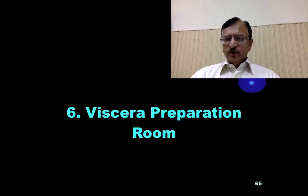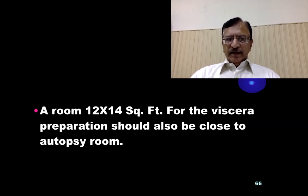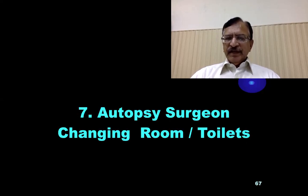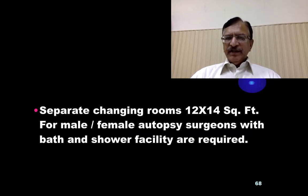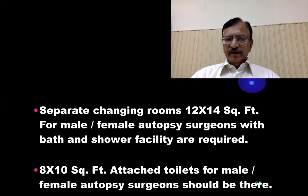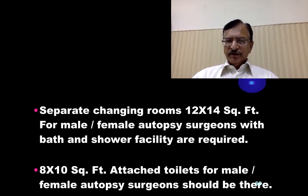A viscera preparation room is necessary for when you collect viscera for toxicological or histopathological analysis. The room where they are prepared for preservation and dispatch is required, measuring 12 x 14 square feet, and should be close to the autopsy room. Separate changing rooms of 12 x 14 square feet for male and female autopsy surgeons with bath and shower facilities are required, along with 8 x 10 square feet attached toilets for male and female autopsy surgeons.